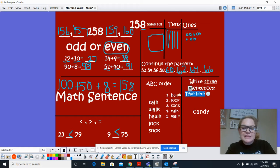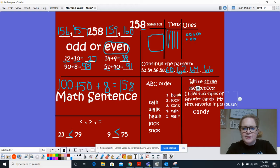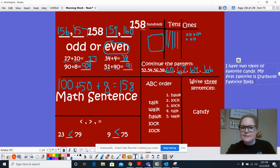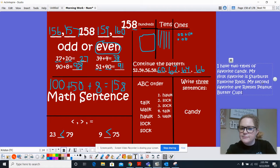All right. So my first sentence is going to say, I have two types of favorite candy. My first favorite is Starburst Favorite Reds. Actually need to capitalize all those words because it's the name of the candy. It's a proper noun. Okay. So I have two types of favorite candy. My first favorite is Starburst Favorite Reds. My second favorite are Reese's peanut butter cups. Great.